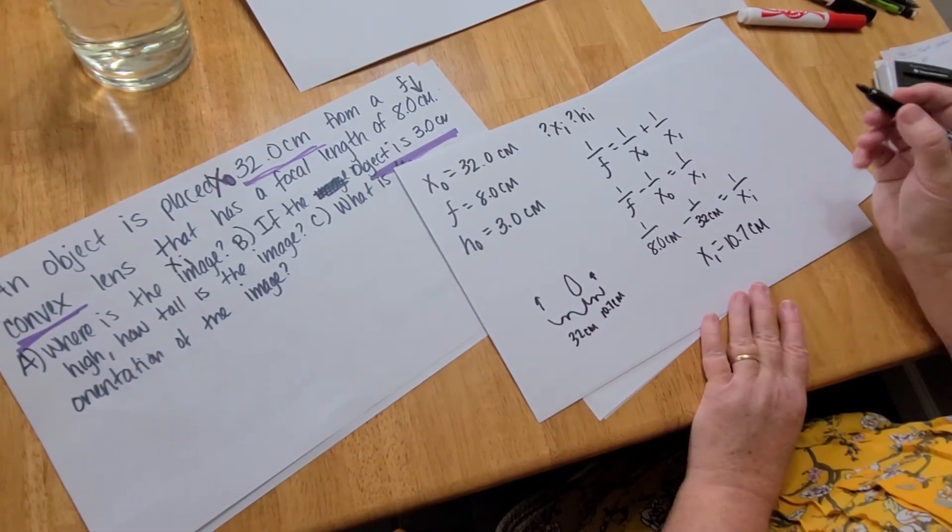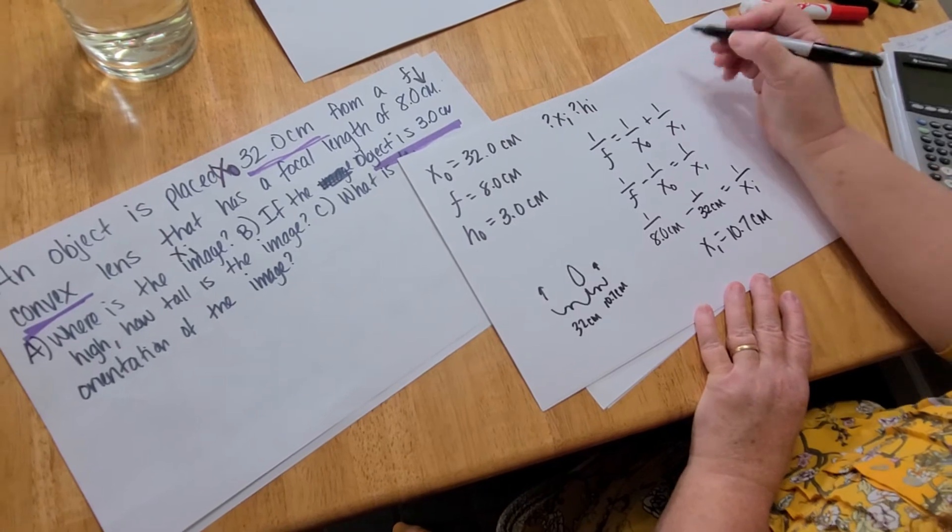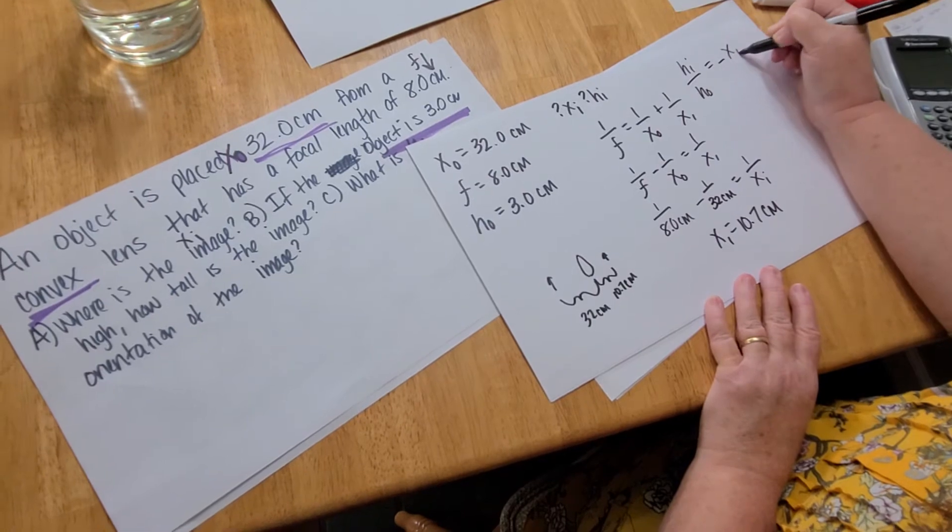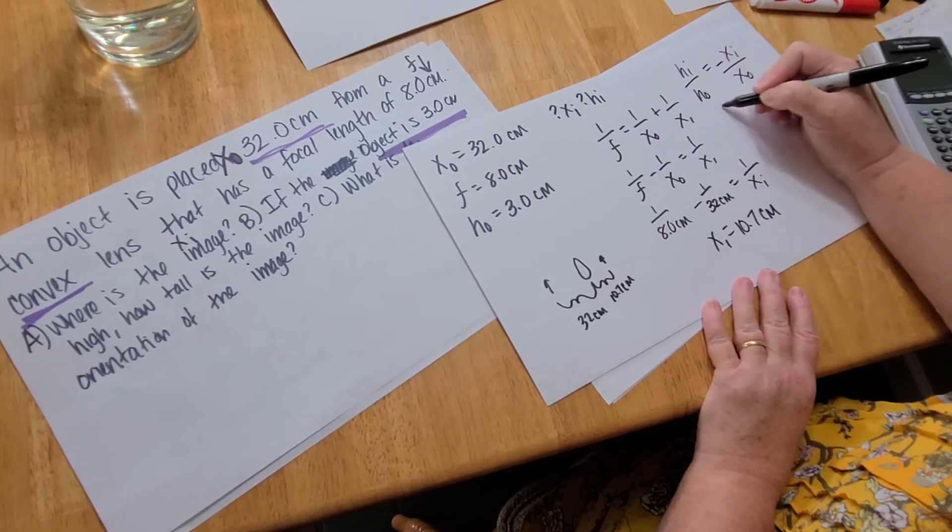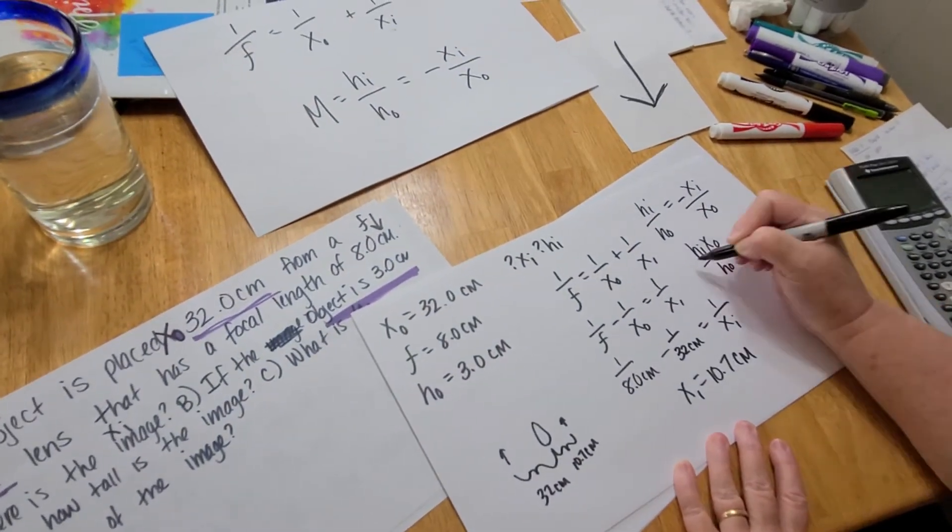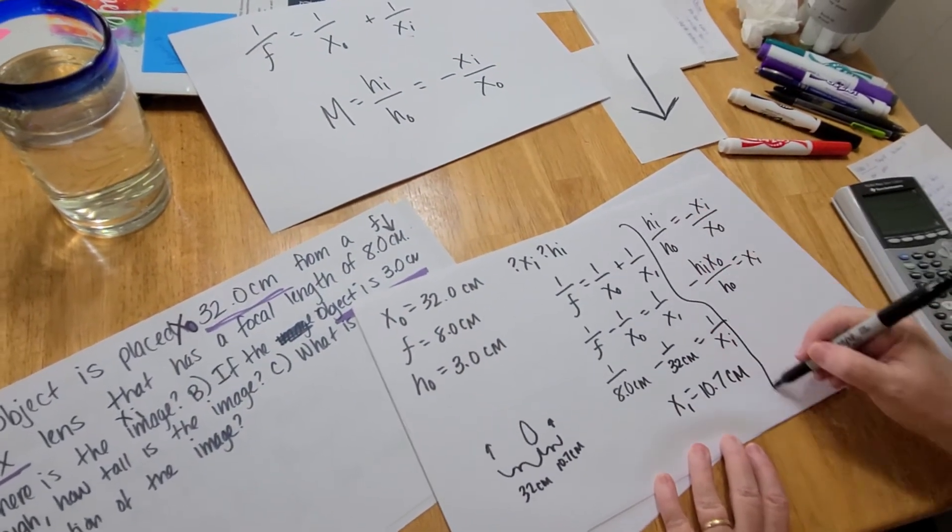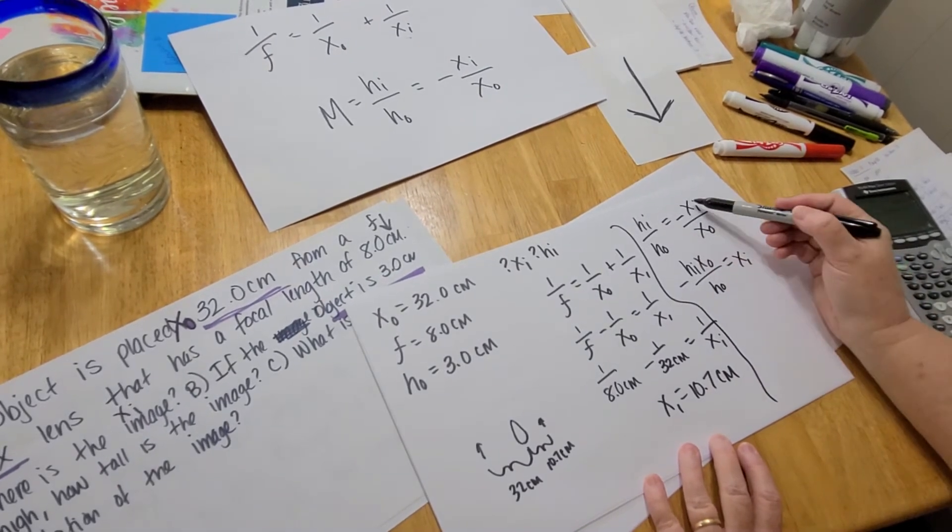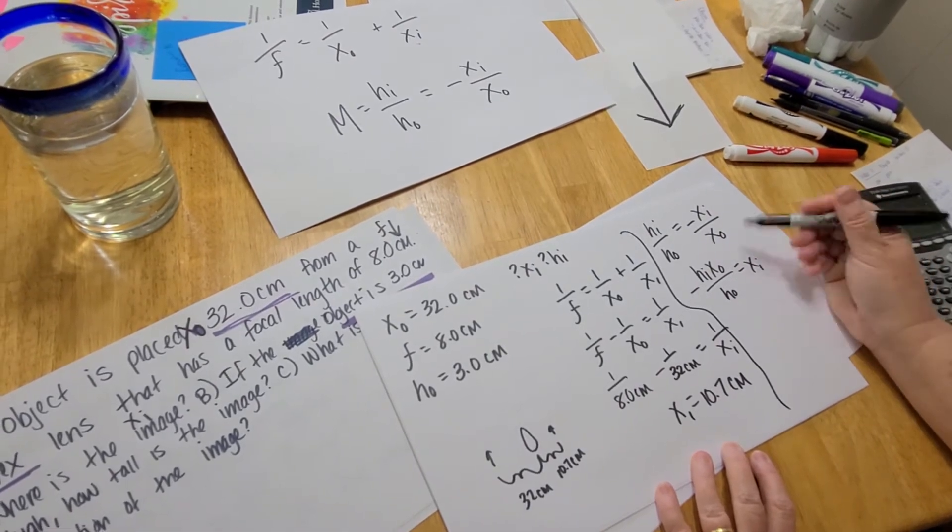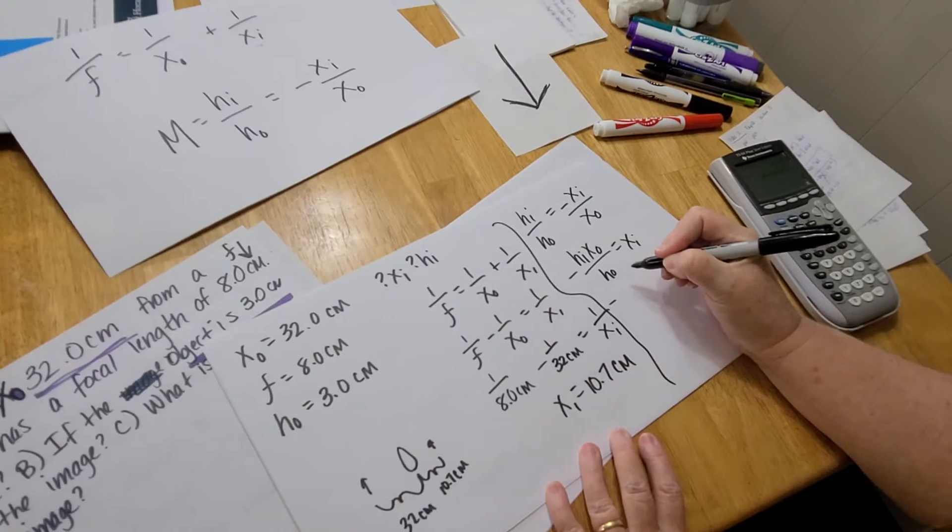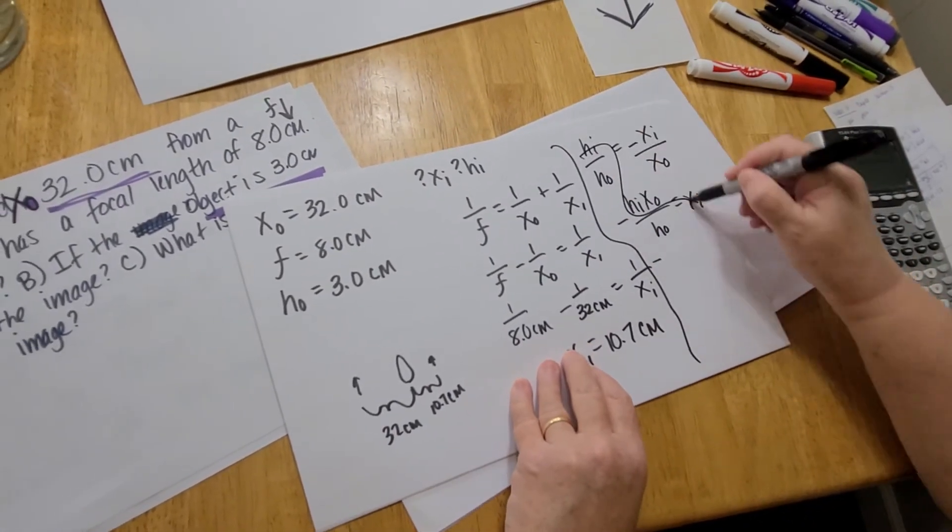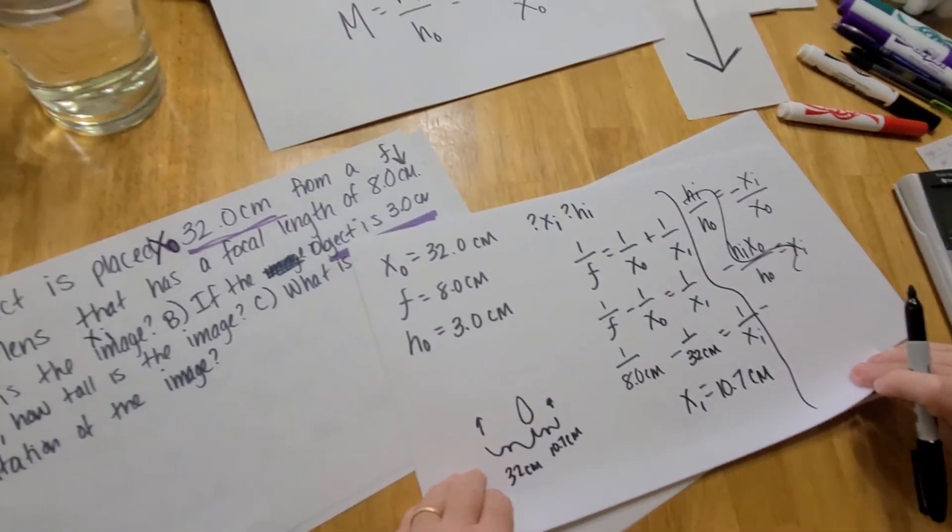The second thing they want to know is how high is the image. According to the other equation, HI/HO = -XI/XO. So I cross multiply and divide by HO and remember to keep the negative. I just did it in one step. Let me try again. HI is what I'm looking for. I already know XI, that's what I figured out in the last part.